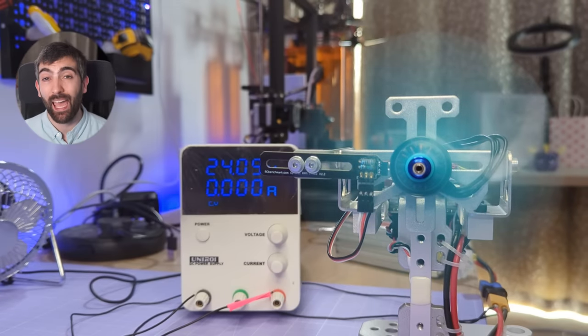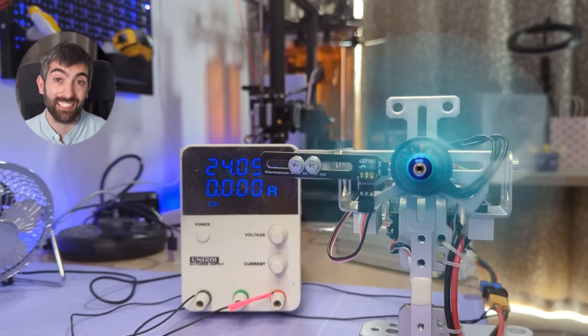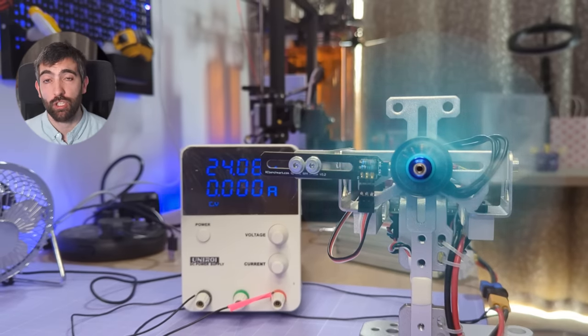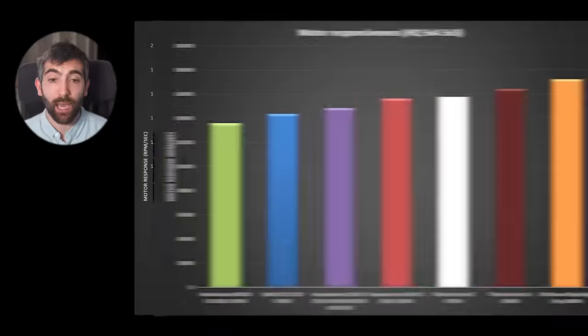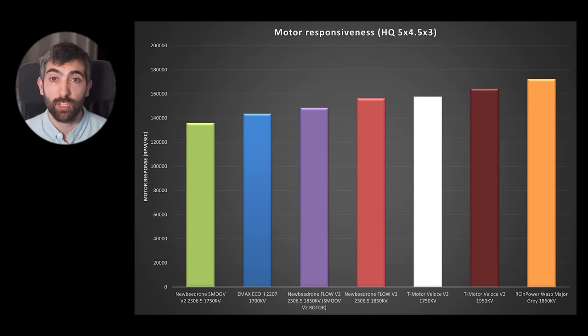These torque results often translate over into motor responsiveness and I measure responsiveness by measuring how fast the motor can accelerate my test prop. I do multiple accelerations and then take the average result and we can see that the Smooth V2 is the least responsive motor from this comparison with the Wasp Major being the most responsive and the difference between the bonded and the sintered magnets on the Flow V2 stator is noticeable. So you can see that the sintered magnets do have better motor responsiveness as a result of being able to produce more torque.